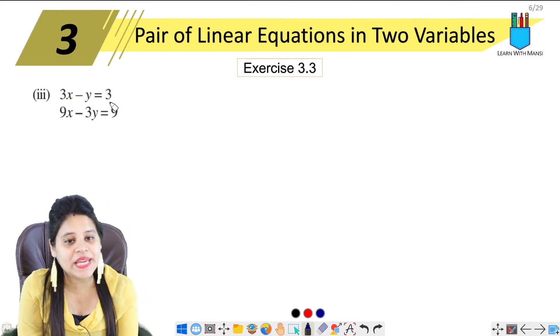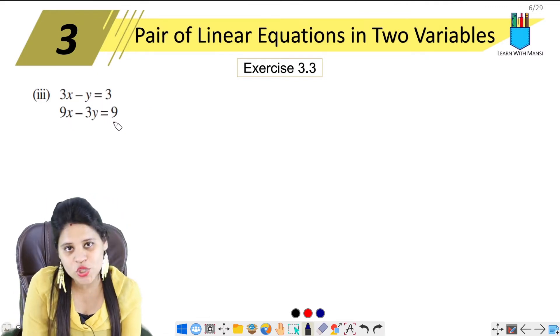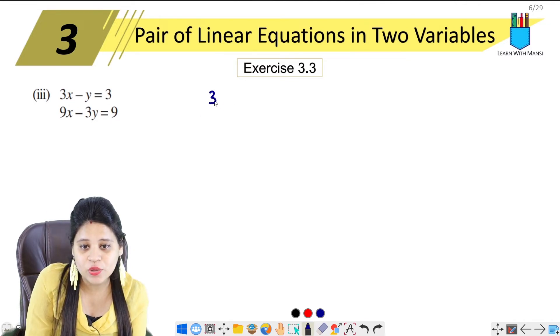3x minus y equals 3 and 9x minus 3y equals 9. So here we go.